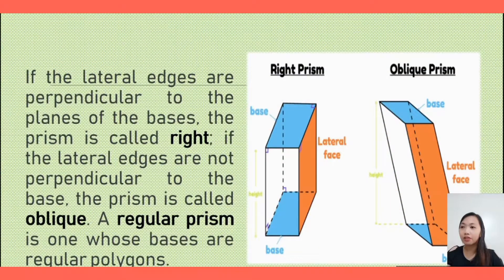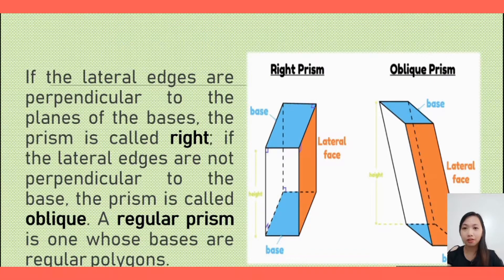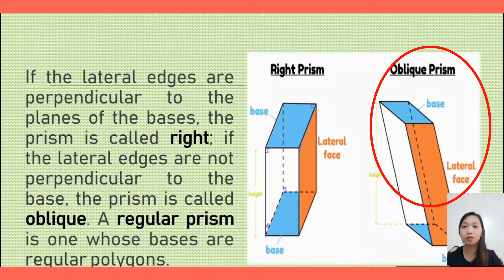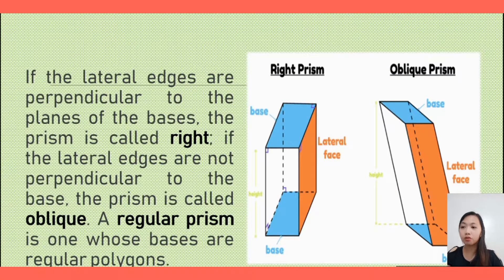If the lateral edges are perpendicular to the planes of the bases, the prism is called a right prism. And if the lateral edges are not perpendicular to the base, the prism is called oblique. Sometimes you can determine whether it's right or oblique when the oblique one is in a slanted position. A regular prism is one whose bases are regular polygons.